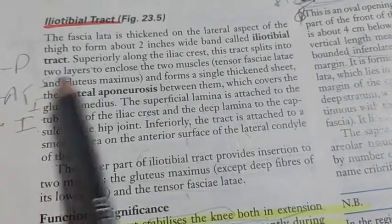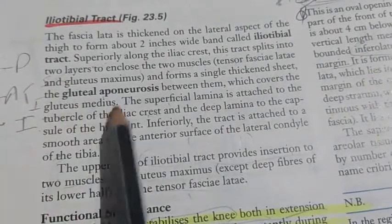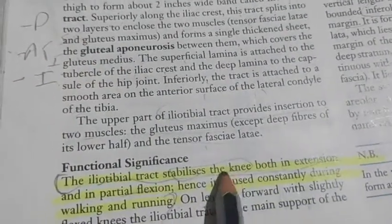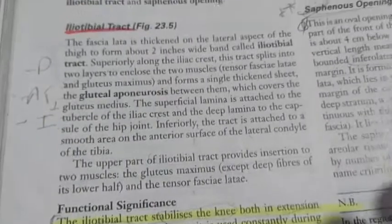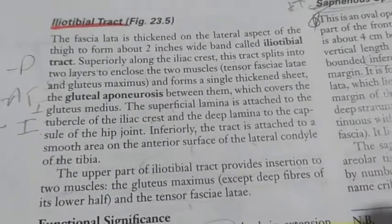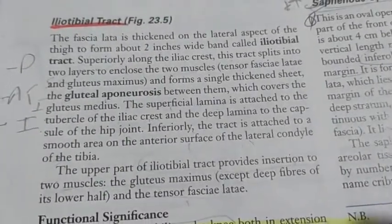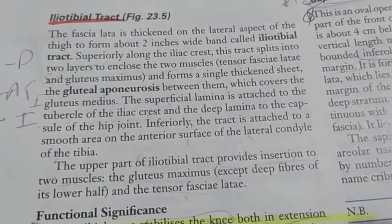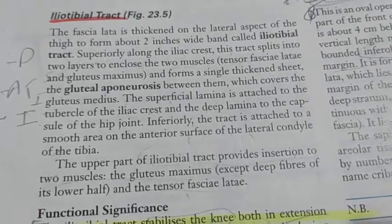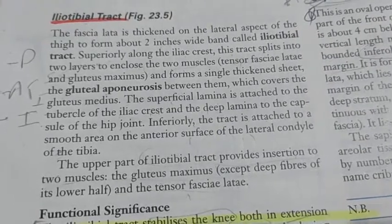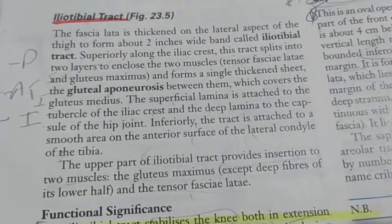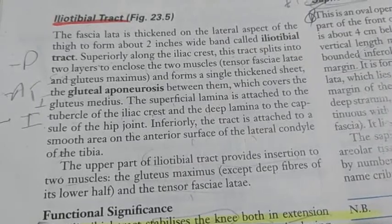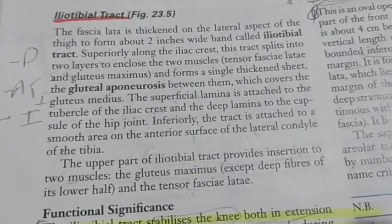Look at the fascia, the superior and inferior attachment, the insertion, and the two muscles. It stabilizes the knee against extension and partial flexion. So that is all about the iliotibial tract. Hope you liked the video — do like, comment, share and subscribe to my channel Mansi Sharma. Don't forget to press the bell icon for the latest videos. Thanks for watching.